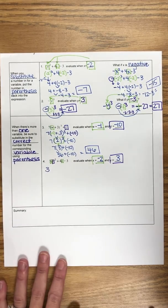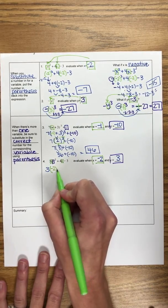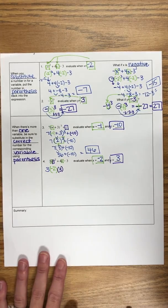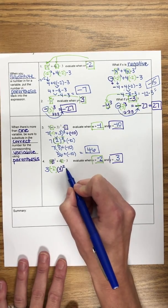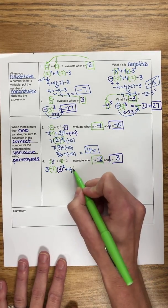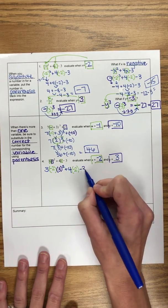So everything stays, and then we're going to plug in with parentheses those numbers. y is 3 squared plus 4, x is negative 2 in parentheses, and then minus 3.